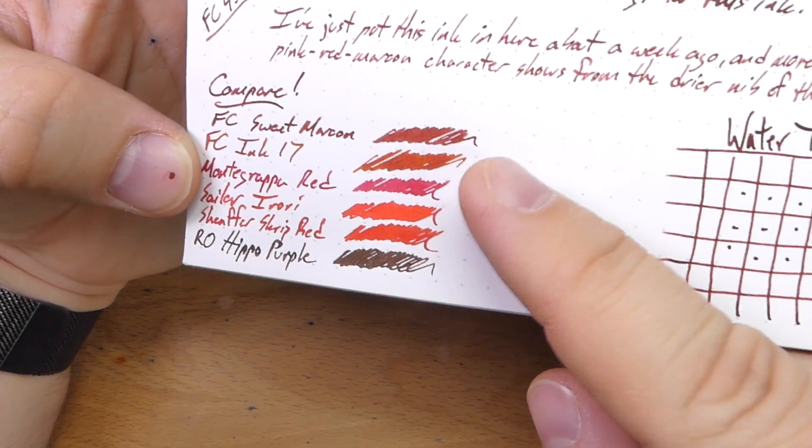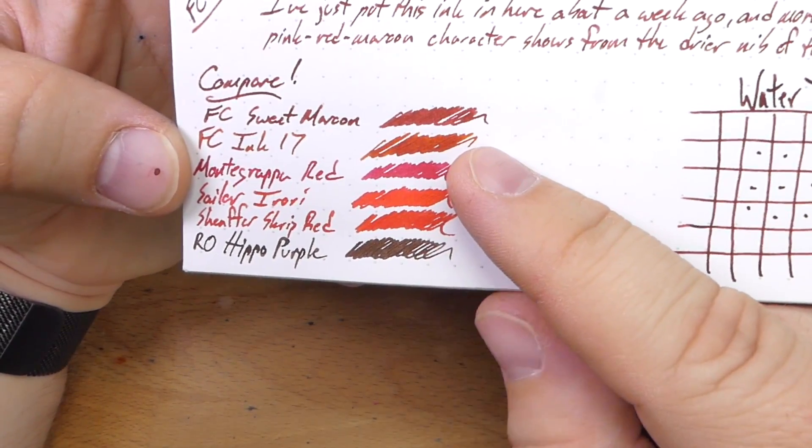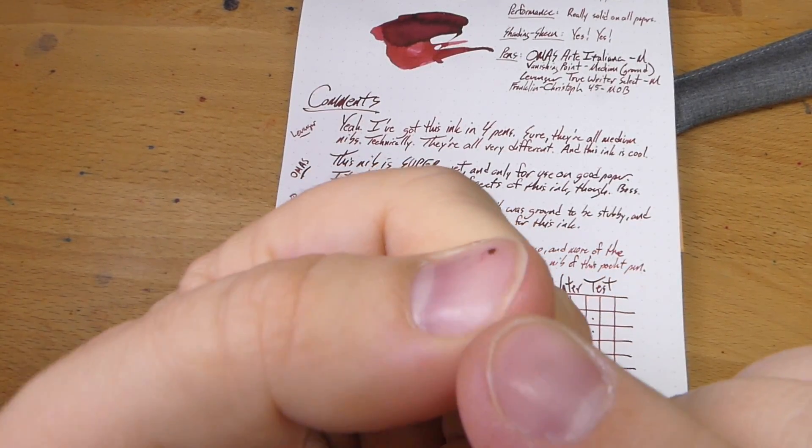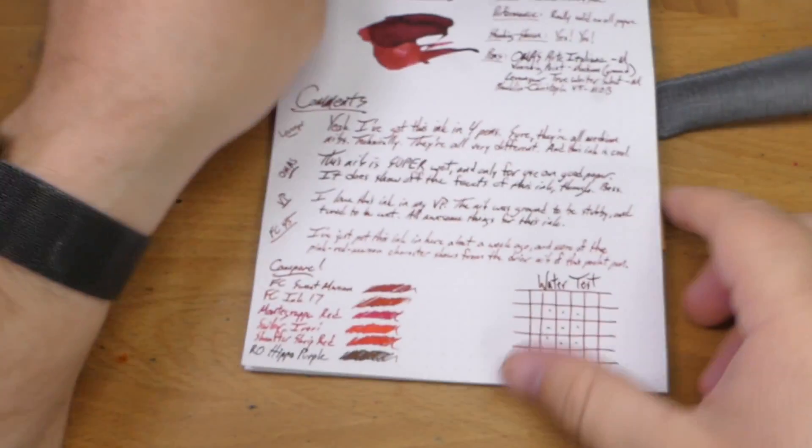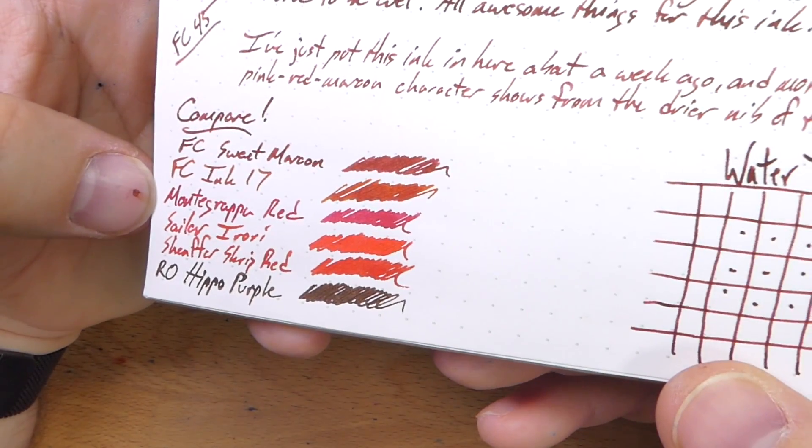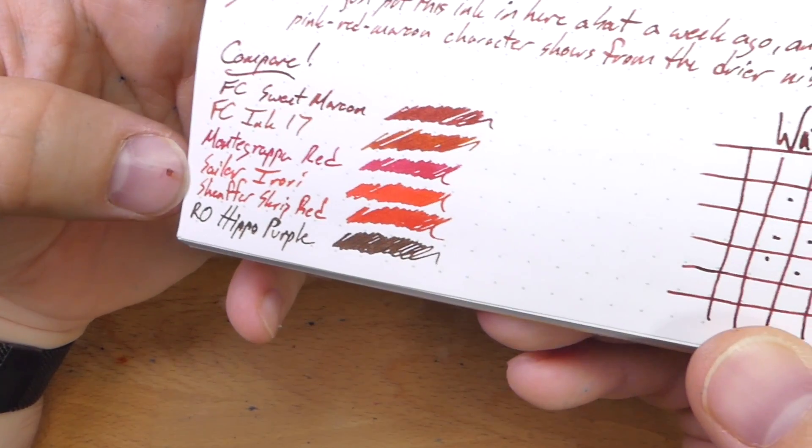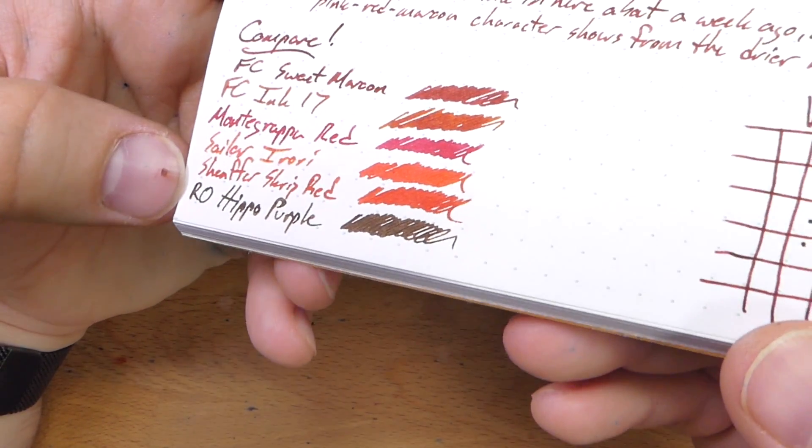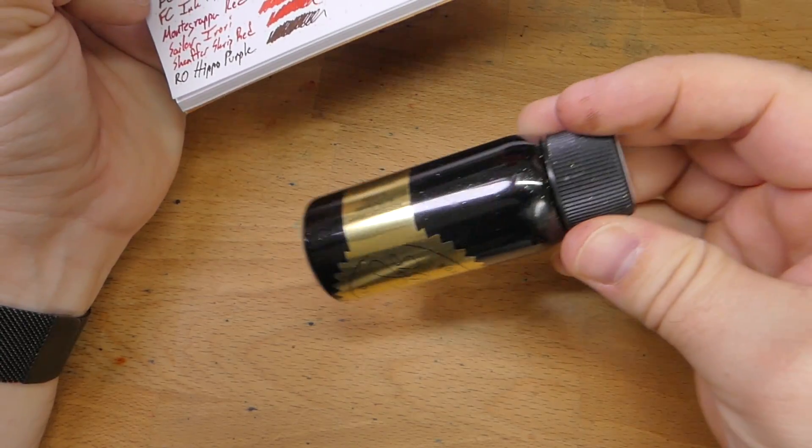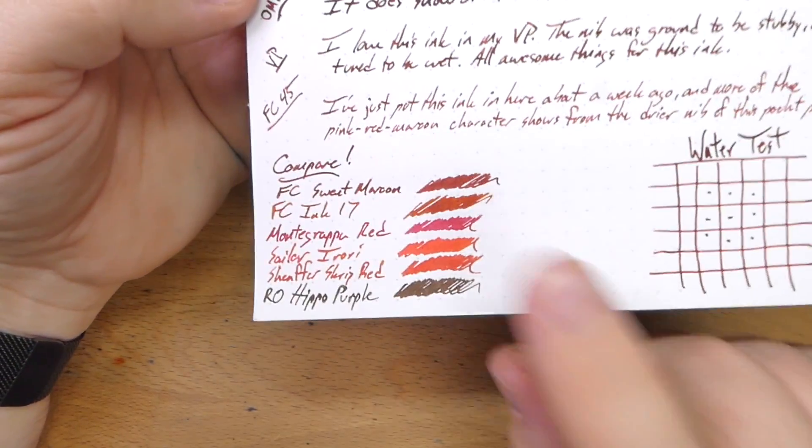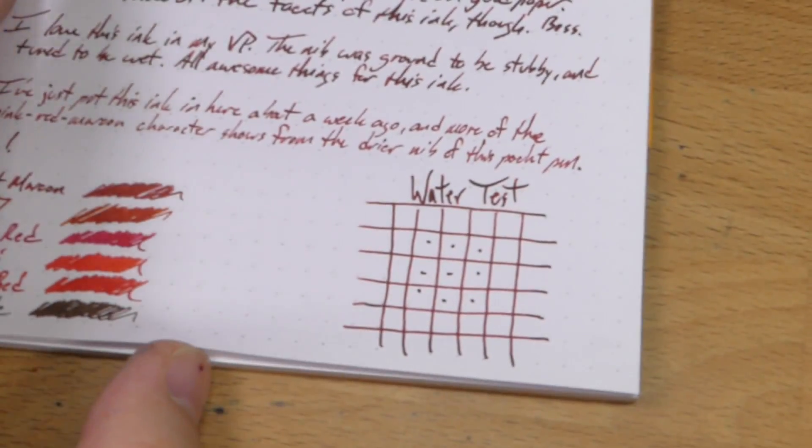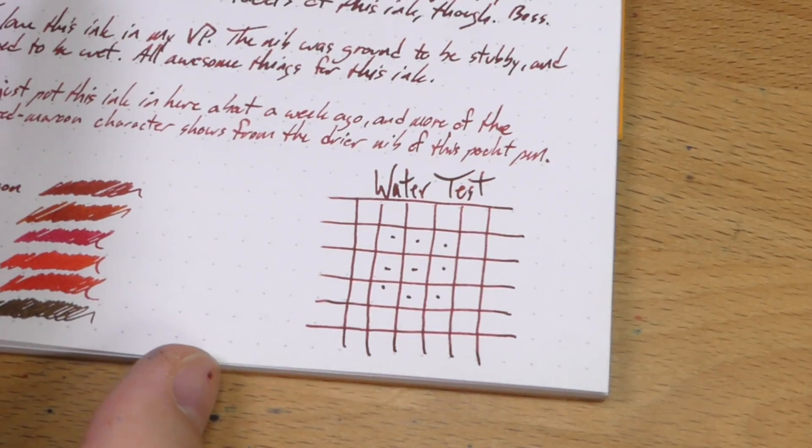As far as things we can compare it to, I had several reds and red adjacents sitting around. Sweet Maroon is up here at the top. Ink 17 is a Franklin Christoff ink they took to Philly, that's all sold out. Then Montegrappa Red, which is a very kind of pinky red. Sailor Arori, which is a tomatoey red. Schaefer Scrip Red, which is a red red. And at the bottom, Robert Oster's Hippo Purple, which is coming soon. This one is not really like any of the other maroons I have. What I like about this sweet maroon is it's got this kind of pinky texture to it, which is very cool.